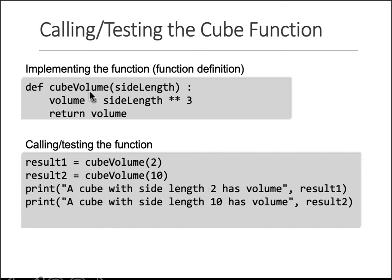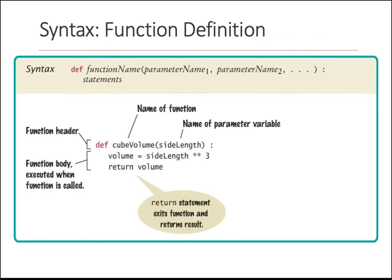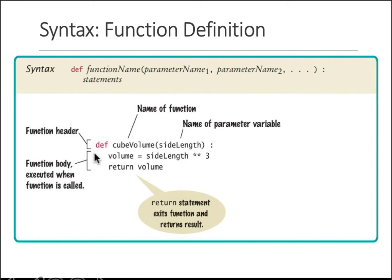Similarly, your cube_volume function, once written, will behave the same every time. To recap: you define a function with the def keyword, give it a name, list the parameters it needs to accept separated by commas, then put a colon and tab all the statements inside. To end the function, press enter twice and make sure your cursor is back at the def indentation level — if it's still tabbed in, it's still part of the function.